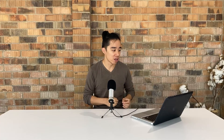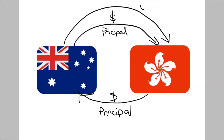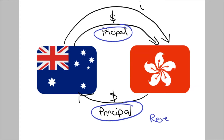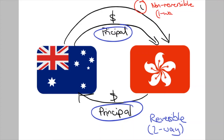Reversible transactions are part of a two-way process. A better example to highlight the difference is transactions involving loans. Imagine if I borrowed money from Hong Kong and have to pay it back. The repayments have two components: the principal and the interest. The principal is the original amount going back — it's part of a two-way process, therefore it's reversible. The interest is now somebody's earning — it's going one way, not coming back. It's non-reversible, and it gets recorded in the current account.